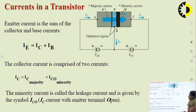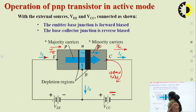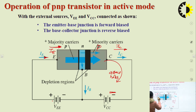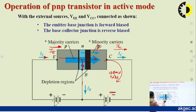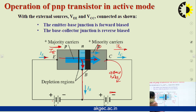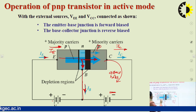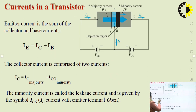Regarding currents in a transistor: the emitter current IE flows in, and due to the transistor's properties it is divided into two branches. A portion of the current flows through the base terminal, represented as IB, and the rest flows through the collector, represented as IC. Therefore: IE = IC + IB.